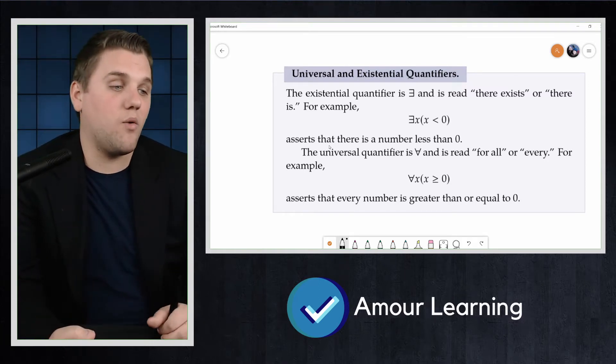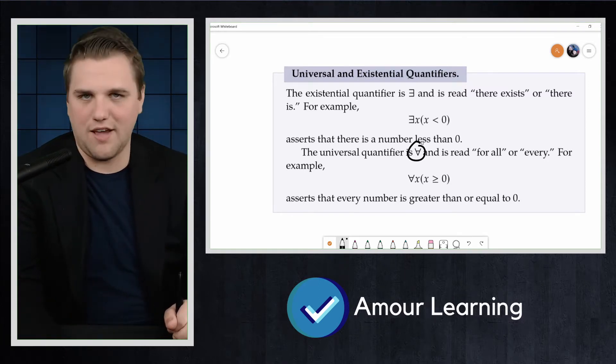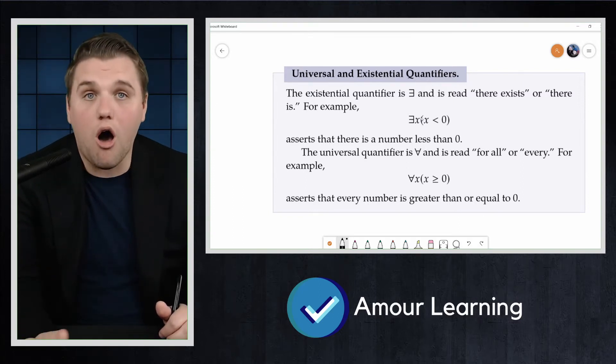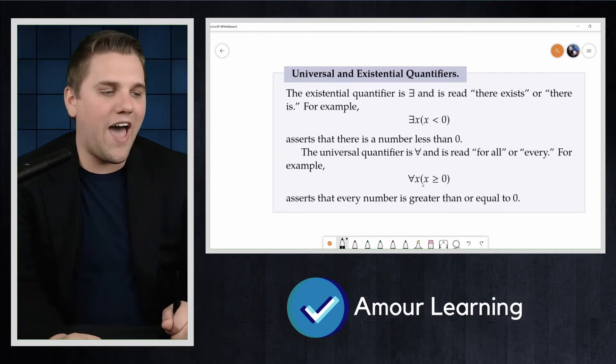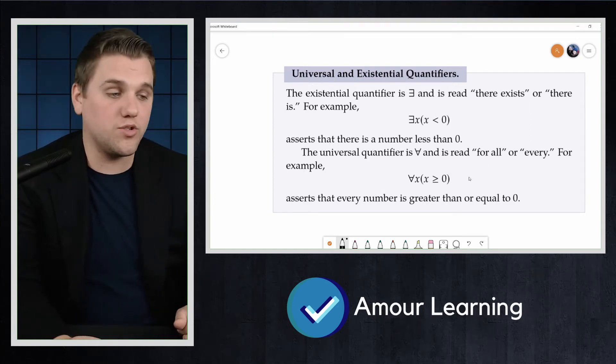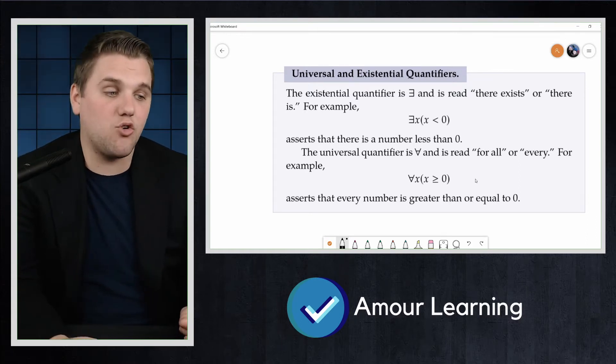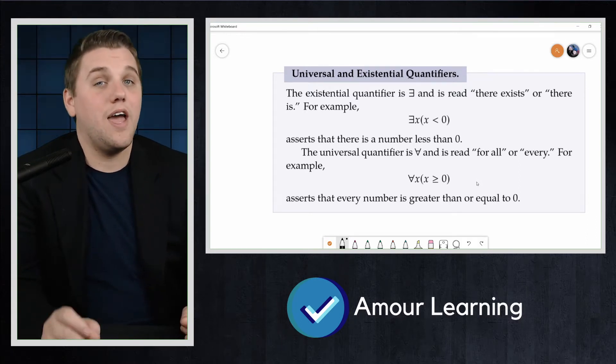The universal quantifier, which is an upside down A, and forgive the notation, it's a little confusing and annoying. It's read for all or every. For example, for all X, X is greater than or equal to zero. Now, this asserts that every number is greater than or equal to zero.